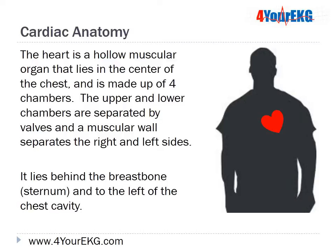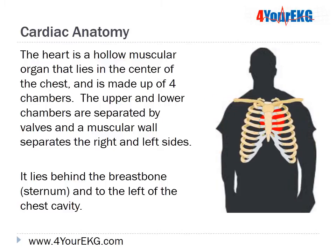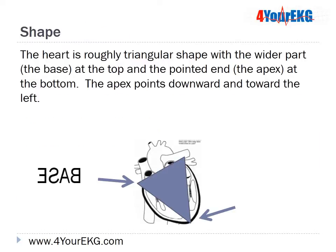The heart is a hollow muscular organ that lies in the center of the chest and is made up of four chambers. The upper and lower chambers are separated by valves, and a muscular wall separates the right and left sides. It lies behind the breast bone, or sternum, and to the left of the chest cavity. The heart is roughly triangular in shape with the wider part, or the base, at the top and the pointed end, known as the apex, at the bottom. The apex points downward and toward the left.